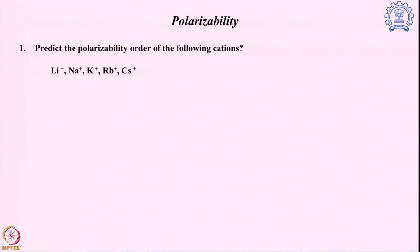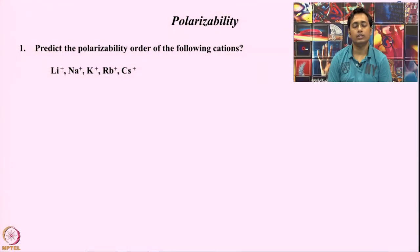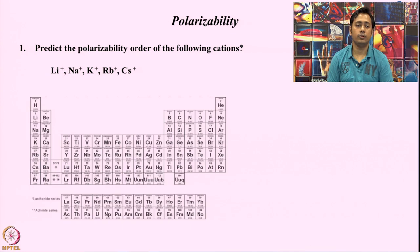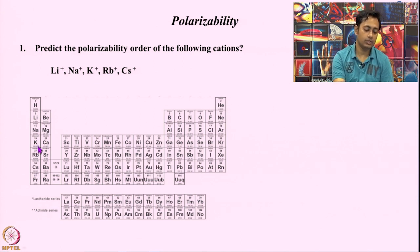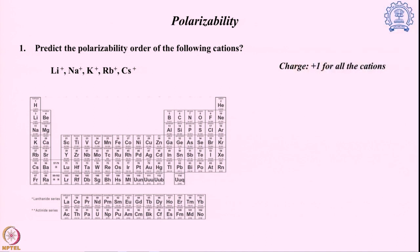To understand polarizability better, we go through some examples. The first problem involves a series of cations: lithium, sodium, potassium, rubidium, and cesium — each with a plus 1 charge — and we want to determine the polarizability order. Since polarizability is a periodic property, we refer to the periodic table. All these cations are present in Group 1. Each has plus 1 charge, so to find the lowest charge density, we need to examine the volume of each ion.